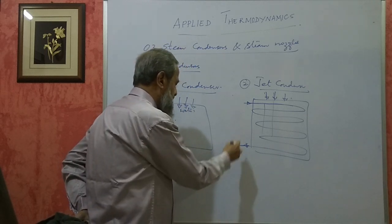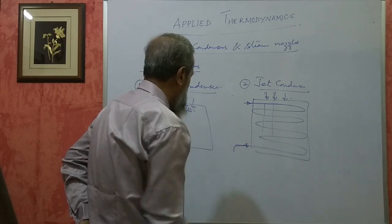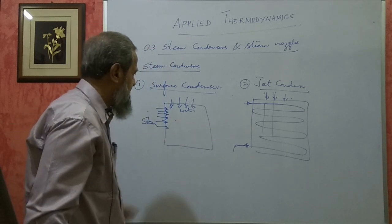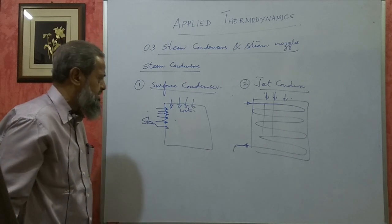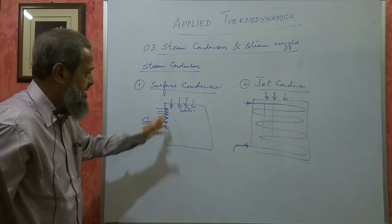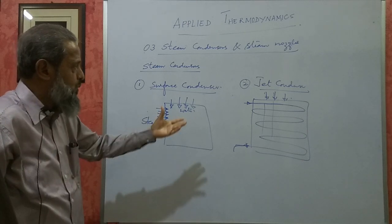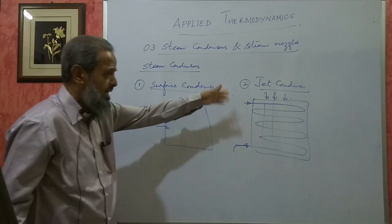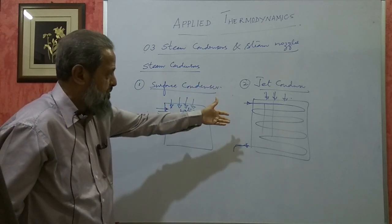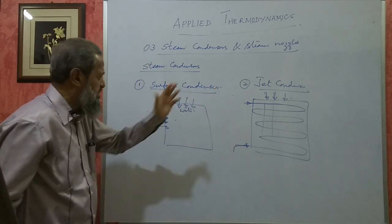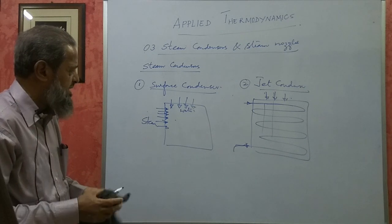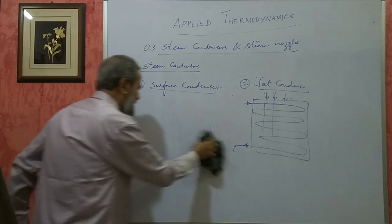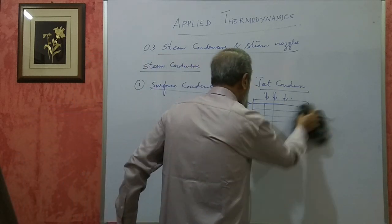In a surface condenser, the water remains pure and can be recycled into the boiler. In a jet condenser, recycling is not possible. The surface condenser is bigger in size while the jet condenser is smaller in size. These are some of the major comparisons. They can also ask you to explain any one of them with a neat sketch. In jet condensers there are further sub-types. No numericals will be asked from condensers.